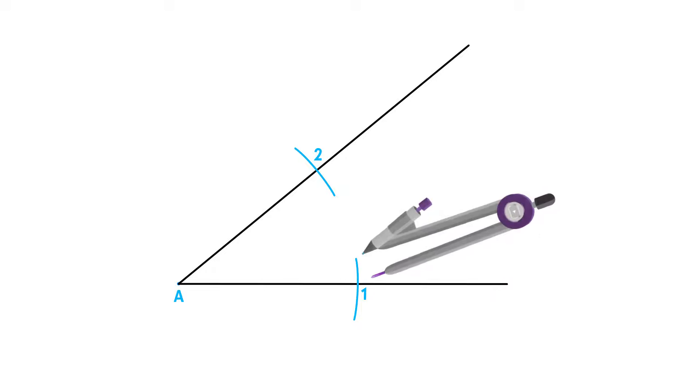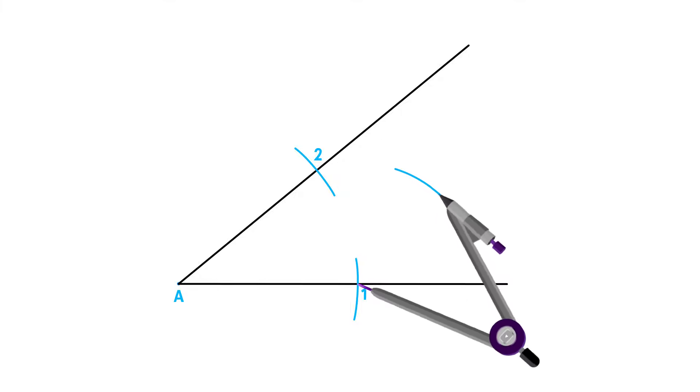Place your compass on point 1 and adjust it to more than half the distance to point 2. I prefer to use the measurement between the two points. Use this measurement to draw an arc between your two sides.